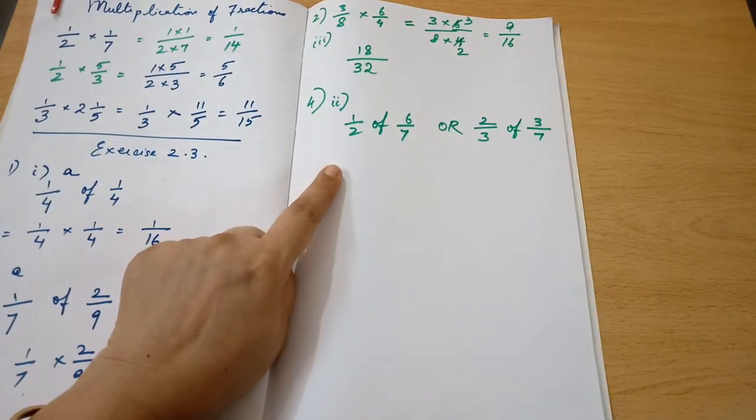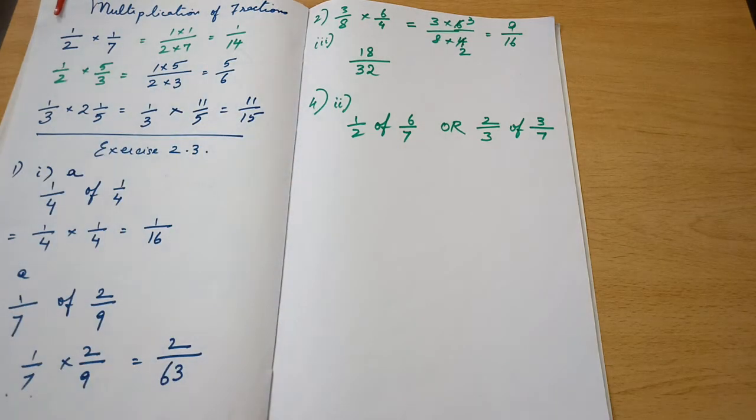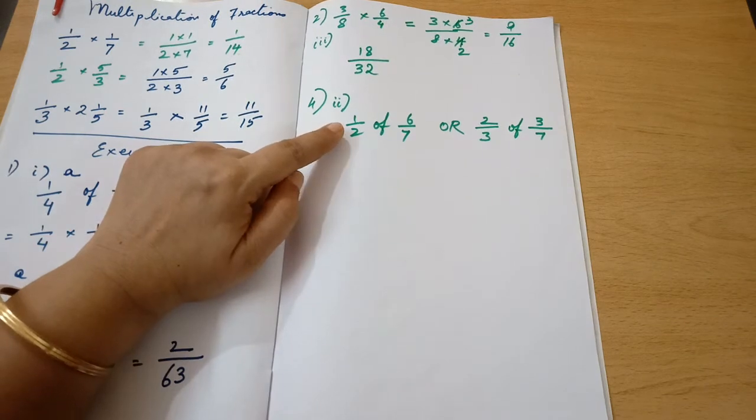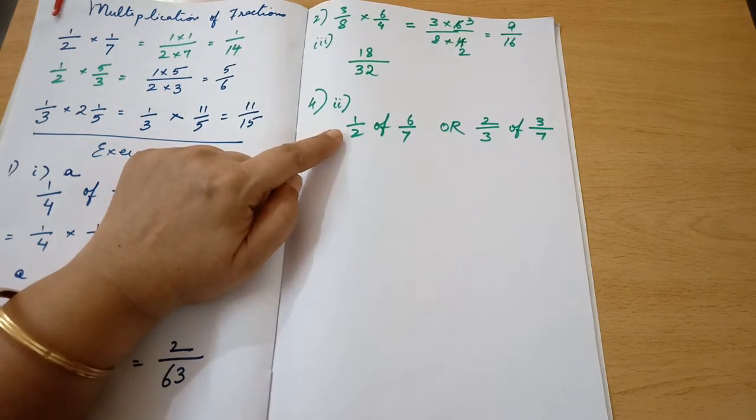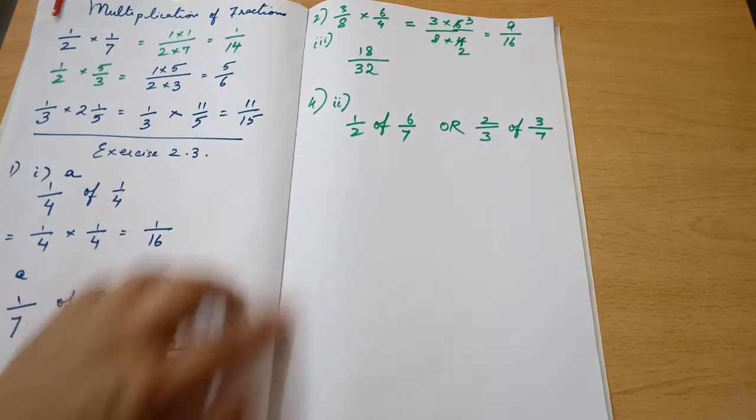So you will have to simplify both sides and compare. How will you compare? You will have to find the LCM and equate the denominators. Unless you make them as like fractions, you will not be able to compare.